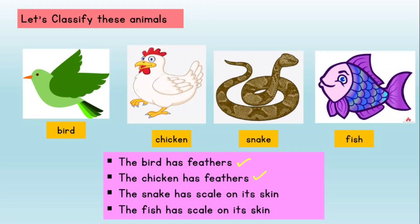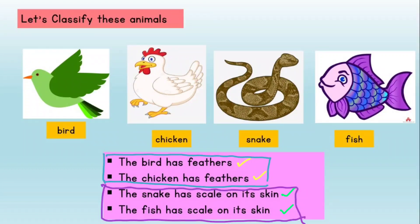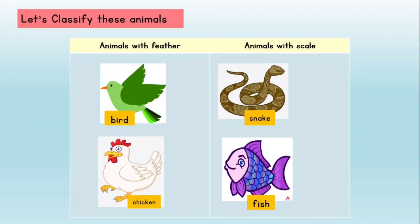Look — the bird and chickens are similar. The snake and the fish are also similar. But the similarity characteristics of the bird and the chickens are different from the snake and fish. Now we can classify them according to their similarities and differences in characteristics.